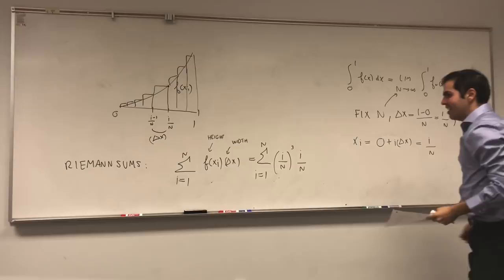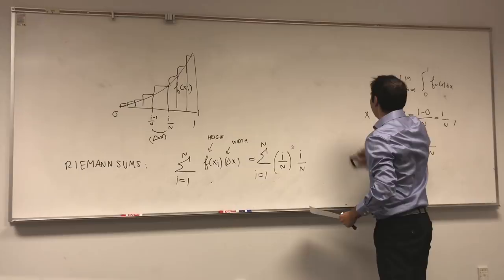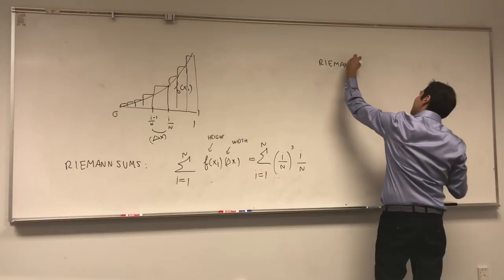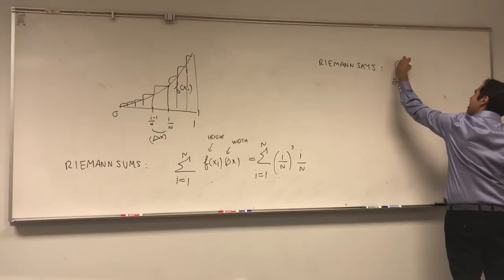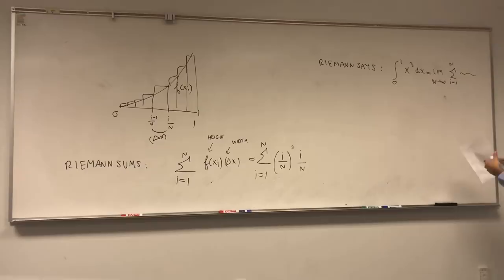And what does Riemann integration say? It tells you that as n gets larger and larger, this is closer and closer to the actual integral. And in particular, if you let n go to infinity, it gives you exactly the value of the integral. So, Riemann says the integral of x cubed dx is in fact equal to the limit as n goes to infinity of those sums.